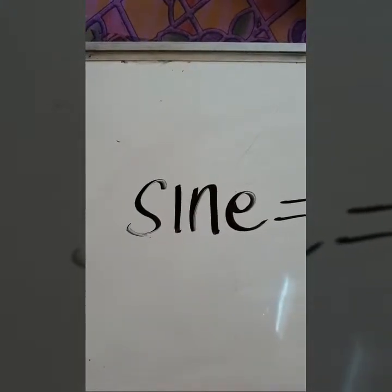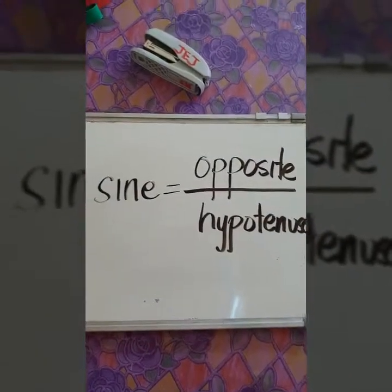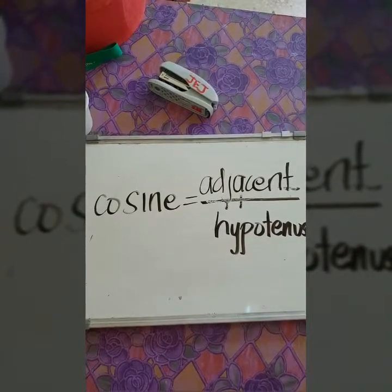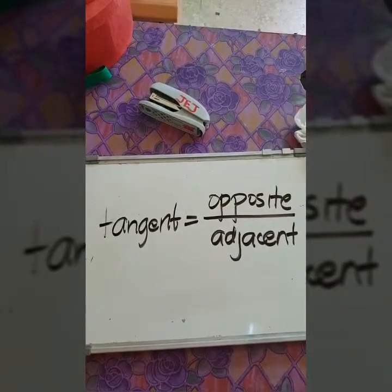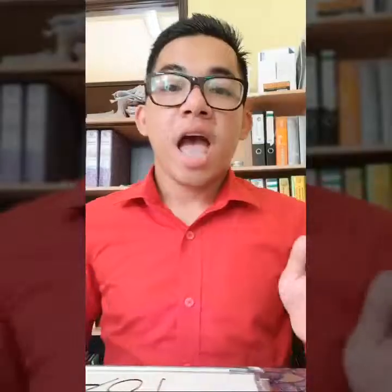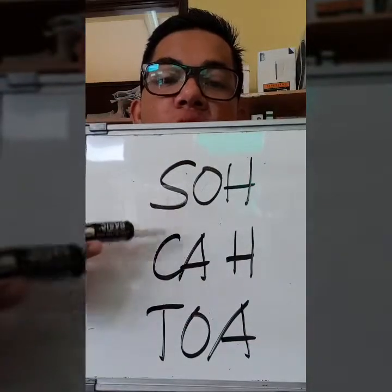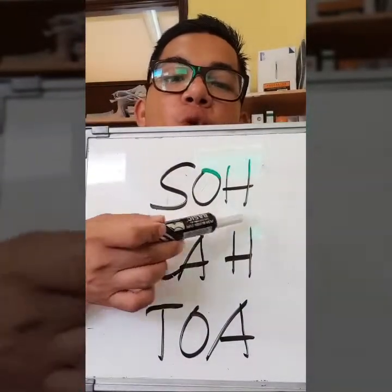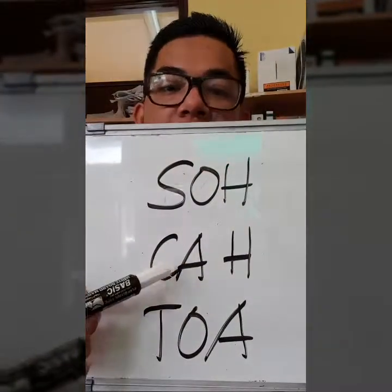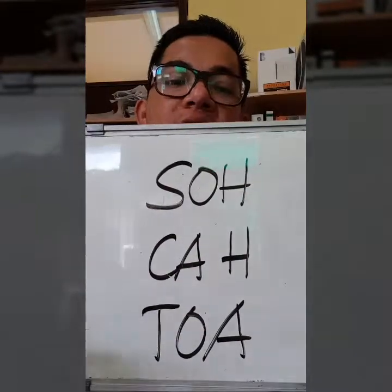Let us proceed with the first three trigonometric ratios, starting with sine. Sine is equal to opposite over hypotenuse. Cosine is equal to adjacent over hypotenuse. And tangent is equal to opposite over adjacent. In order to memorize it easily, use SOH-CAH-TOA: SOH stands for sine equals opposite over hypotenuse, CAH for cosine equals adjacent over hypotenuse, and TOA for tangent equals opposite over adjacent.